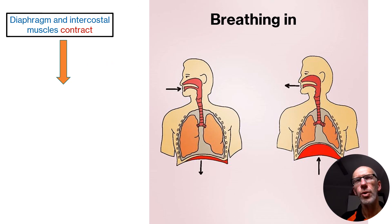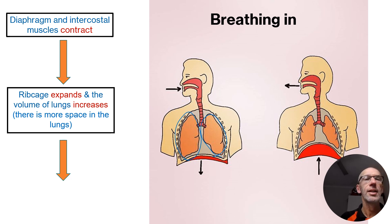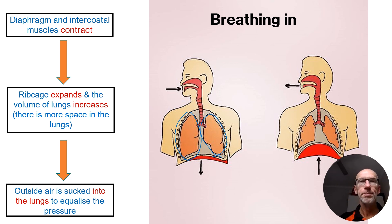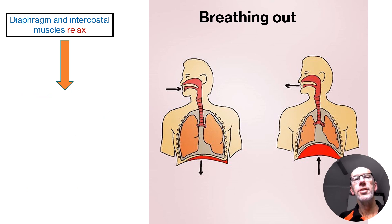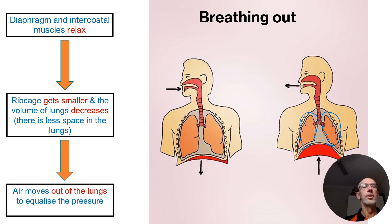As the diaphragm and intercostal muscles contract, this causes the rib cage to expand, which increases the volume of the lungs. In order to equalize that pressure, we breathe in more air to create equilibrium. Then as the diaphragm and intercostal muscles relax, our rib cage gets smaller, the volume of the lungs decreases, and so we exhale that air in order to equalize the air pressure in our lungs.